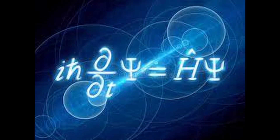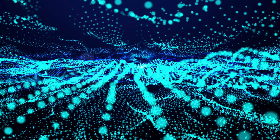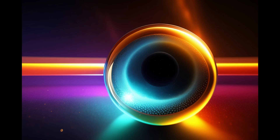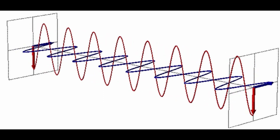The radial component of the wave function can be calculated using the radial Schrödinger equation. The solution to this equation gives us the radial component of the wave function, which can be used to calculate the probability density of finding the electron at a particular distance from the nucleus. In conclusion, the wave function is a complex-valued mathematical function that describes the quantum state of a system and is a solution to the Schrödinger equation, which describes how the wave function evolves over time. The wave function of the hydrogen atom is an example of a real-world application, describing the behavior of the electron in the hydrogen atom.